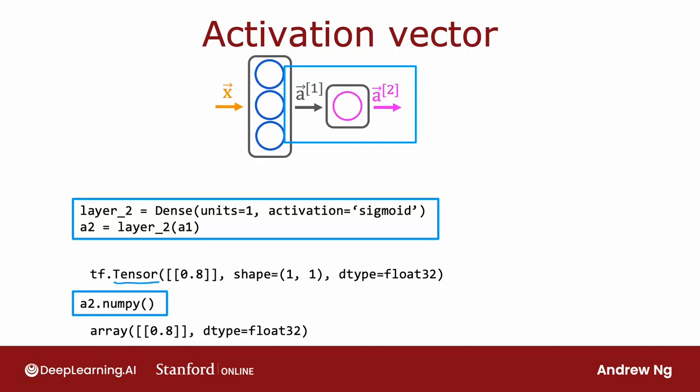Now let's take a look at what the activations output by the second layer would look like. Here's the code that we had from before. And layer two is a dense layer with one unit and a sigmoid activation. And A2 is computed by taking layer two and applying it to A1. So what is A2? A2 may be a number like 0.8. And technically, this is a one by one matrix, a 2D array with one row and one column. And so it's equal to this number 0.8. And if you print out A2, you see that it is a TensorFlow tensor with just one element, one number 0.8. And it is a one by one matrix.